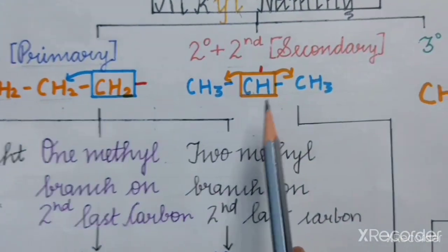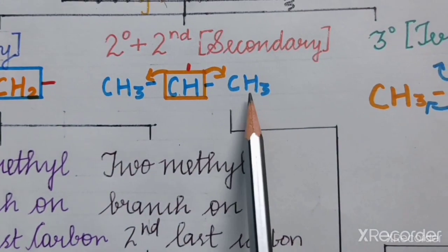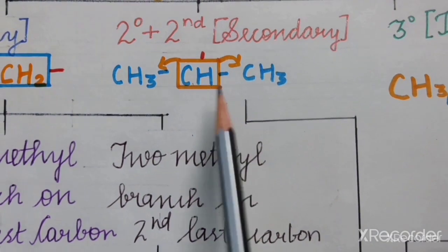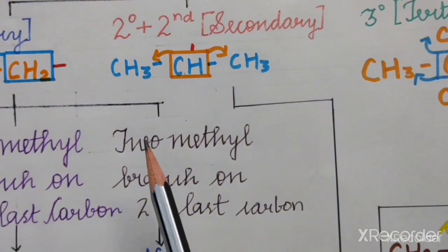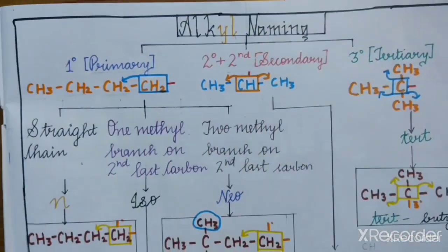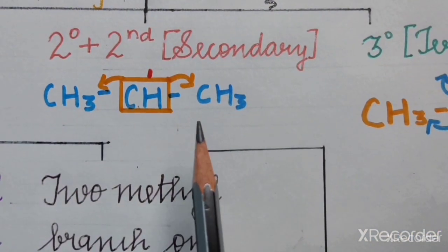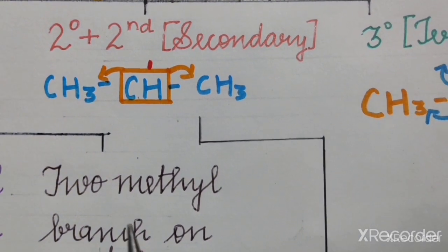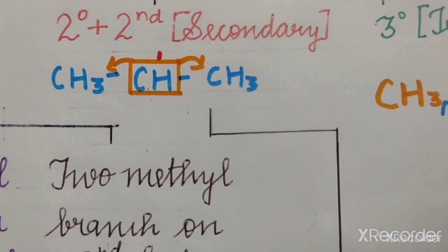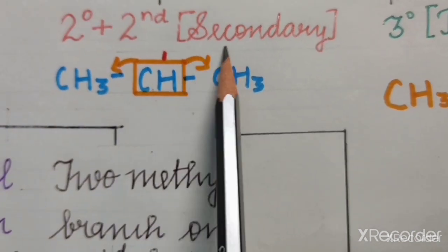When the carbon with incomplete bond is directly attached to one carbon, it is known as primary or one degree. For secondary or two degree, it should satisfy two conditions: first, it should be directly attached to two carbons, and second, it should be in the second position. Only if it satisfies both conditions is it considered secondary.